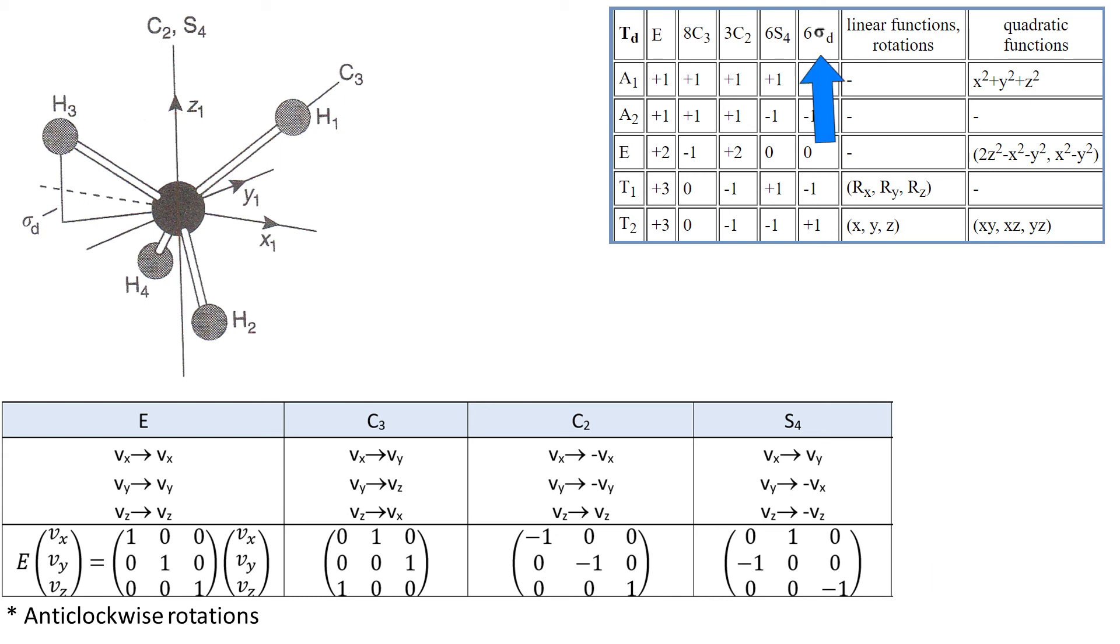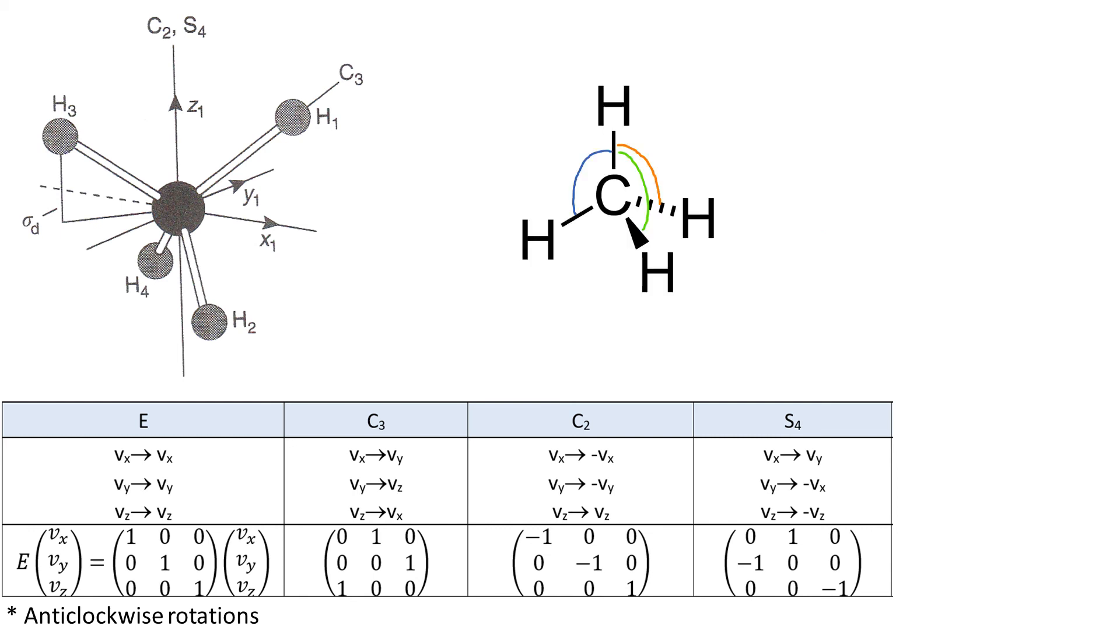Now, the last class are reflections, sigma D's. So what are the planes? They cut along the angles which are between the bonds. So here we see three angles, and then there are three angles at the bottom as well. So there are six such angles, so there are six planes.